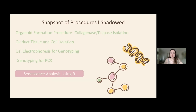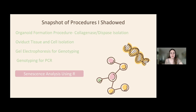I also want to provide a brief snapshot of all the experiments I was able to shadow and lab procedures I learned about. I watched organoid formation procedures including a collagenase dyspase isolation consisting of organ collection and dissection, tissue digestion, and a cytospin protocol. I also watched oviduct tissue and cell isolation, learned about gel electrophoresis for genotyping using a 2% agarose gel, and shadowed a genotyping PCR protocol to determine the genotypes of different mice samples, including tissue collection, DNA isolation, sample mix preparation, and running PCR for DNA amplification. I also spent a majority of this summer learning R, having had no prior knowledge of coding, and it was an amazing introduction to how computer programming can be applied to data analysis.